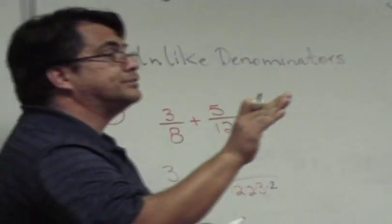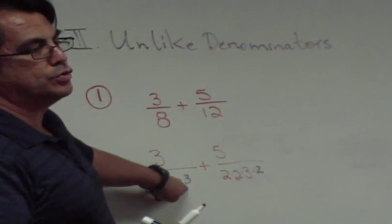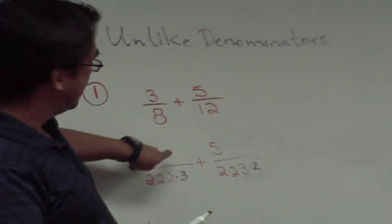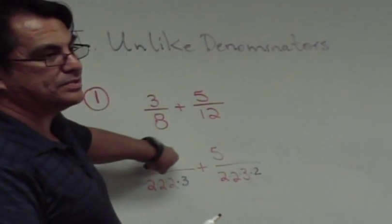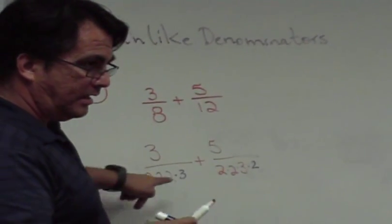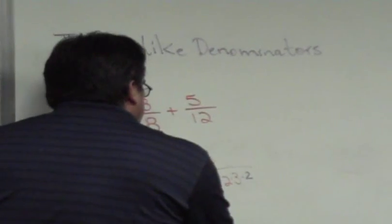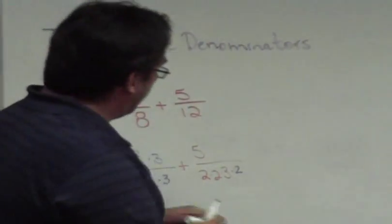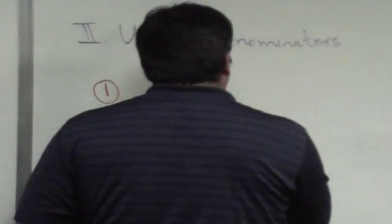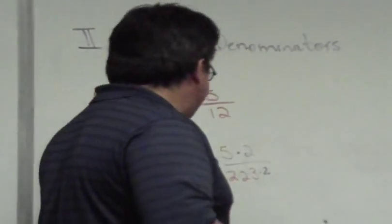Your experience tells you that when you multiply the bottom of a fraction by something, what do you need to do to make sure the fraction doesn't change in value? The top. The top has to be multiplied by the same factor. What did we multiply this denominator by? 3. So we need to multiply this numerator by 3 as well.